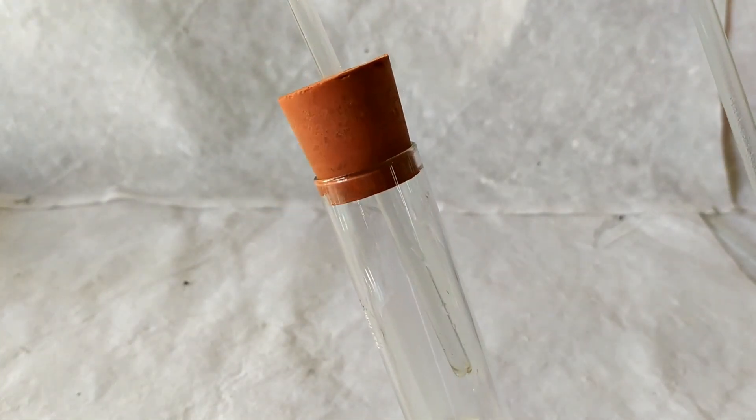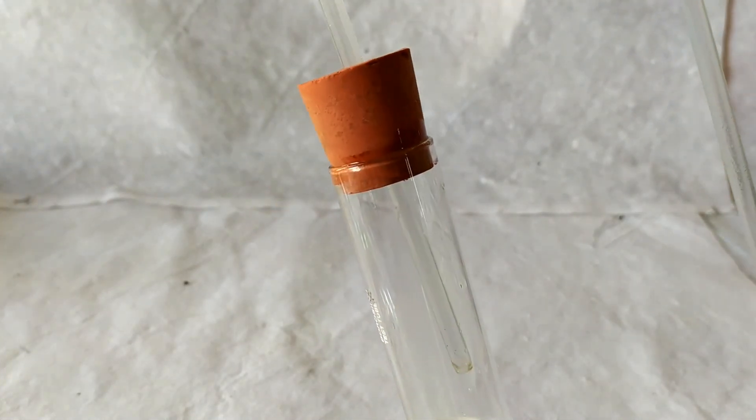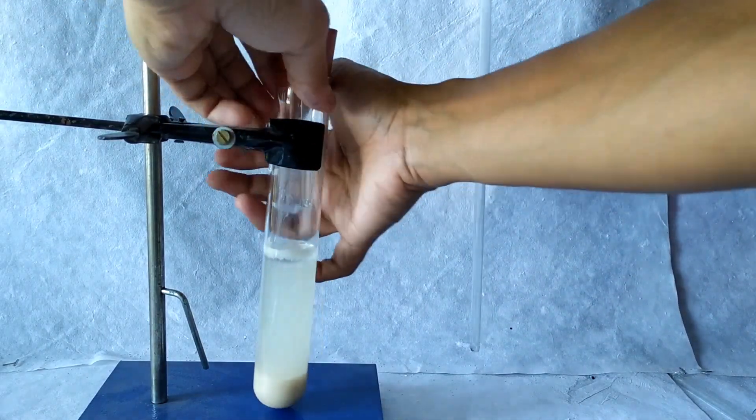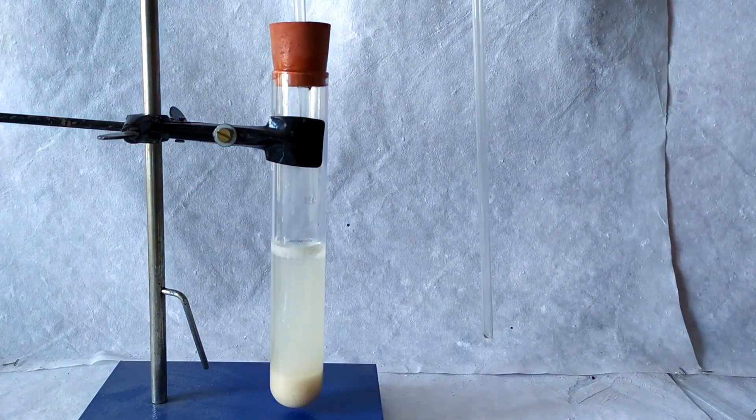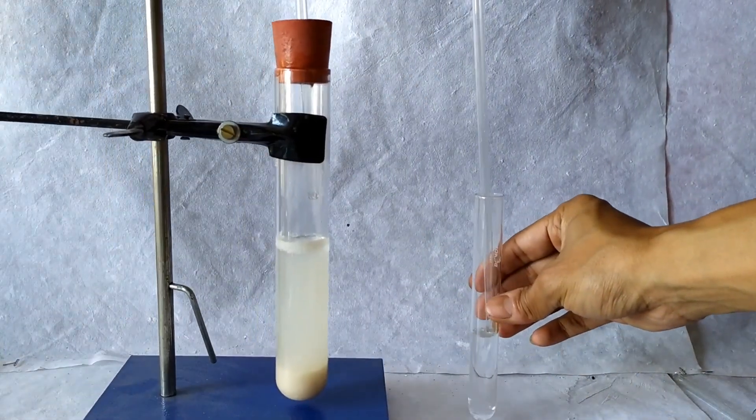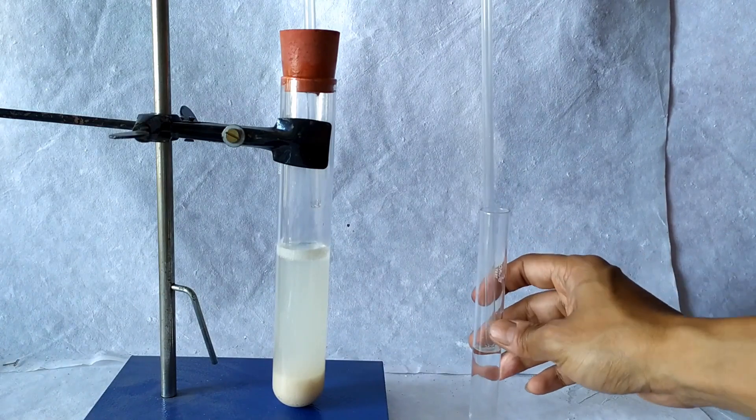Now seal the cork using glycerol or grease. Secure the test tube using a clamp stand. Once the tube has been secured, introduce the other end of the delivery tube into the smaller test tube containing lime water, making sure that the end of the tube is immersed well below the level of the lime water.